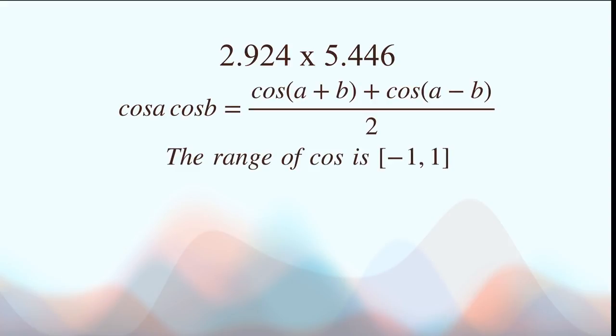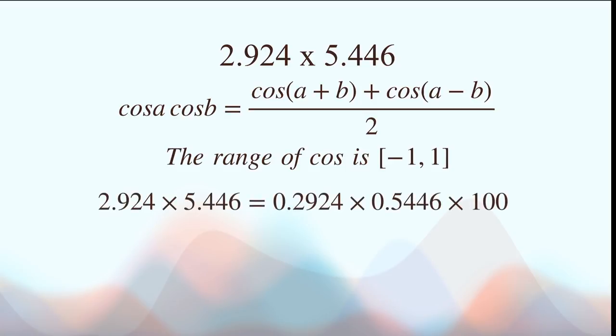So multiplying everything by 100 to obtain 0.2924 and 0.5446, which is in the range of the cosine function. And because it is in the range of the cosine function, we know that there must be an angle A and an angle B that equals that number.